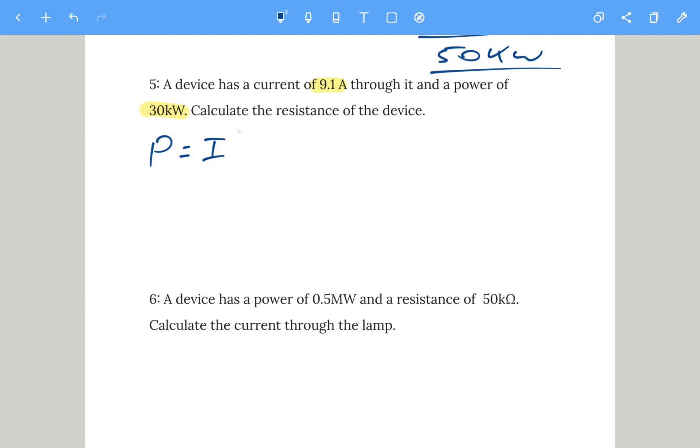Power equals I squared R, and we need to make R the subject. Sometimes people can struggle with this one, but R is simply multiplied by I squared. The opposite of timesing by I squared is simply dividing by I squared to give us the resistance. The power is 30 kilowatts, so that's 30,000. You could write 30 times 10 to the power of 3 if you wish. Divided by the current squared, so we need to do 9.1 squared, and that gives a resistance of 362 ohms.